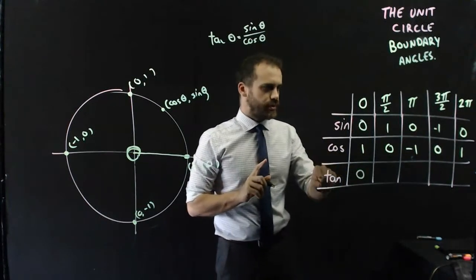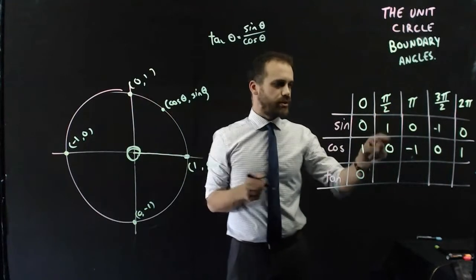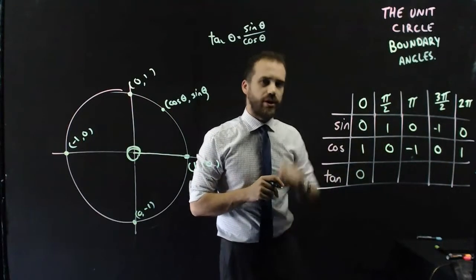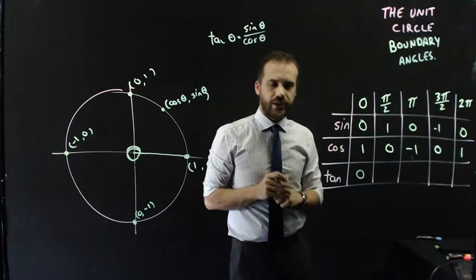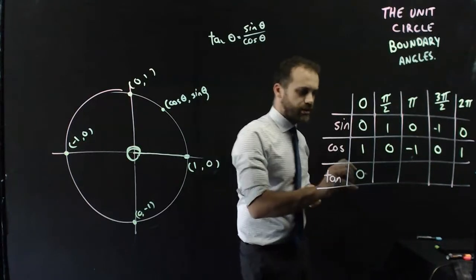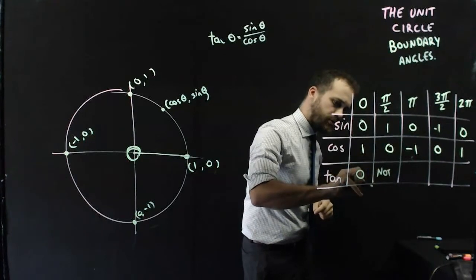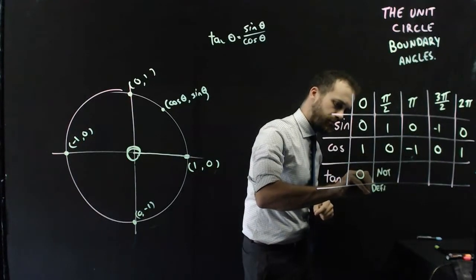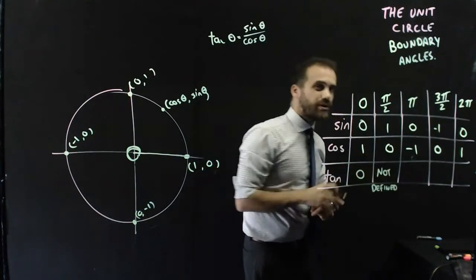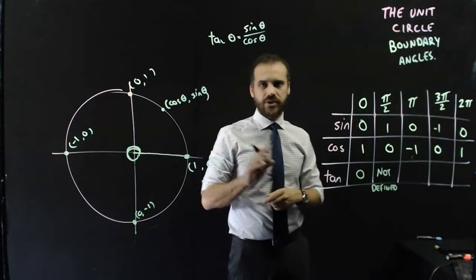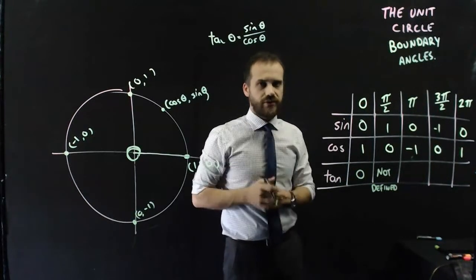Next one, tan of pi on 2 is equal to 1 divided by 0. You can't divide by 0, that's not okay. So we call this not defined. We don't call it infinity, we don't call it 0, we call it not defined, it's very specific.